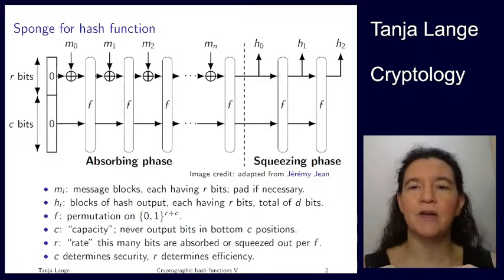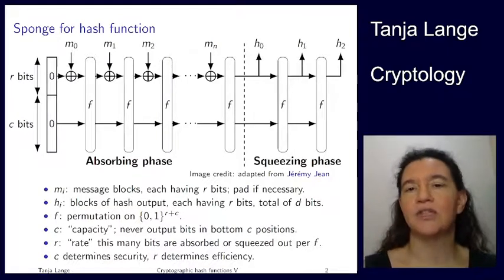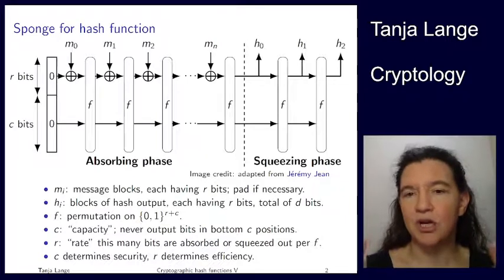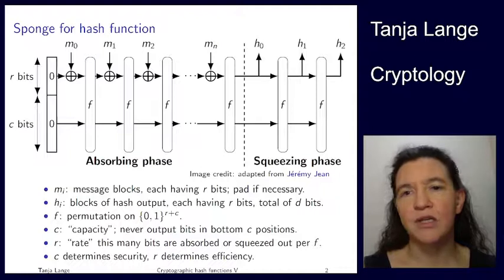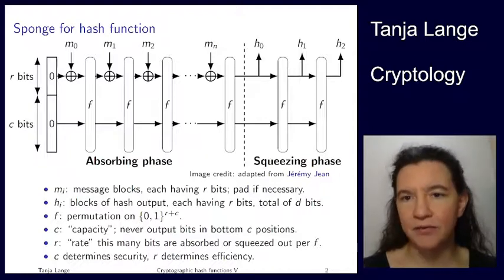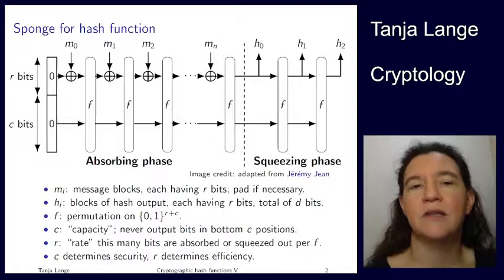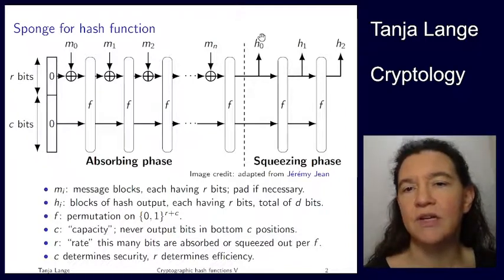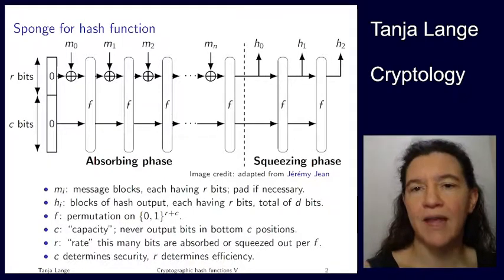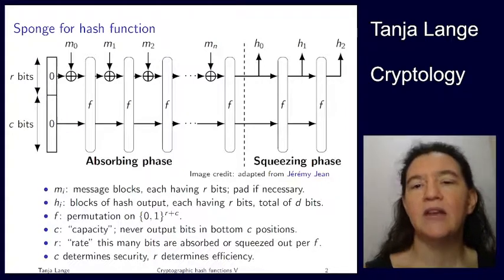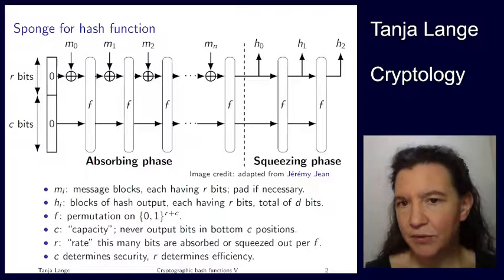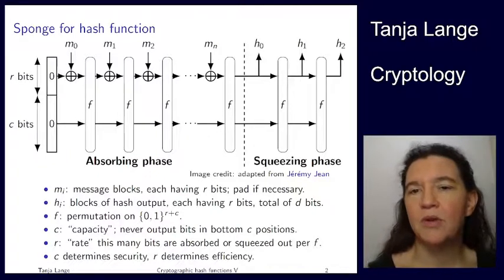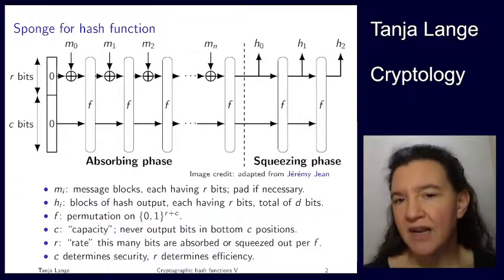And then comes the squeezing phase. In the squeezing phase, you're outputting parts of the hash. In reality, this might be just one part or two parts, because typically our hash outputs are short — typically 224, 256, 384, or 512. And if this length R, the top bits, is already longer than the output length, we only output one block, so the whole thing ends already here, and you might even have to truncate one of those. But sometimes, if your R is particularly small or your output length is particularly big, you actually do more steps and output more blocks.